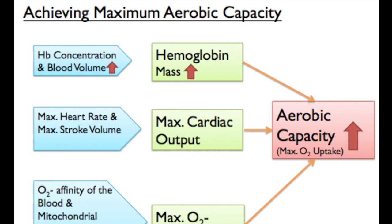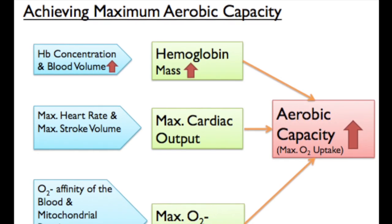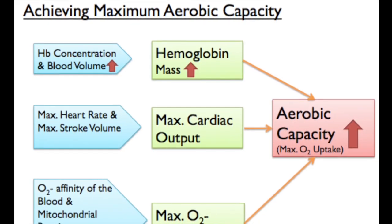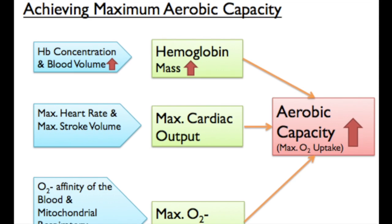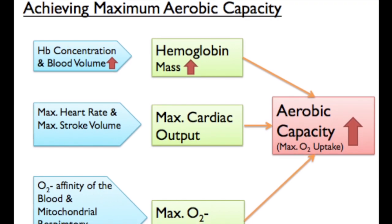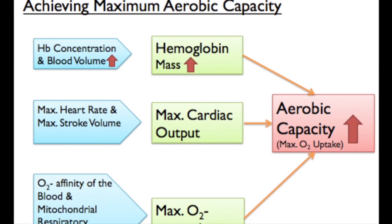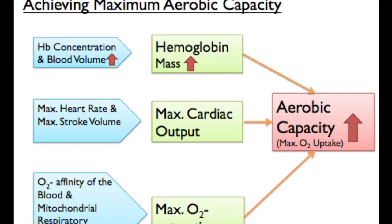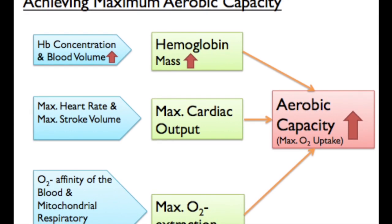The body undergoes aerobic respiration in order to provide sufficient delivery of oxygen to the exercising skeletal muscles. The rate of maximum oxygen uptake depends on cardiac output, oxygen extraction, and hemoglobin mass.